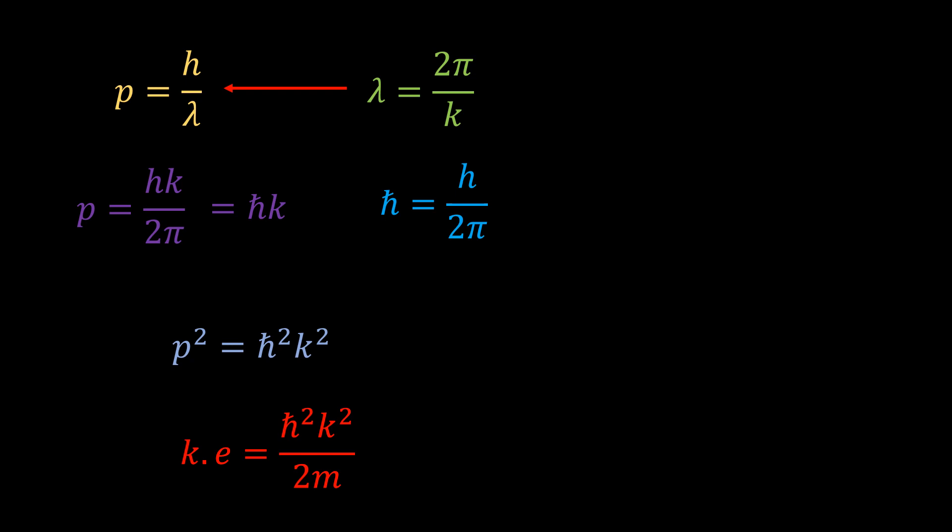In the last video, we also derived the Planck-Einstein equation, E equal hf. There is a relation between frequency and angular velocity, which is as follows. So frequency is equal to omega over 2 pi. Subbing this in the Planck-Einstein equation yields energy equal to h bar omega.